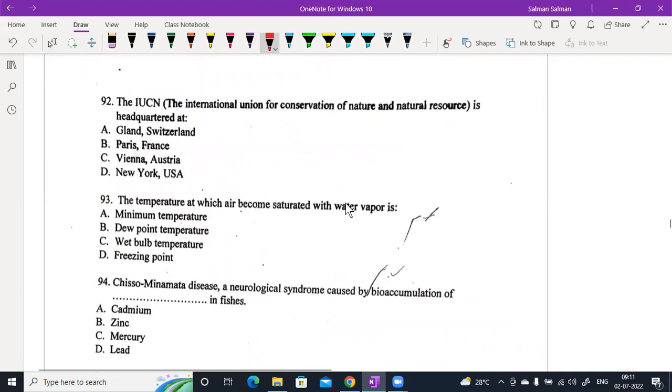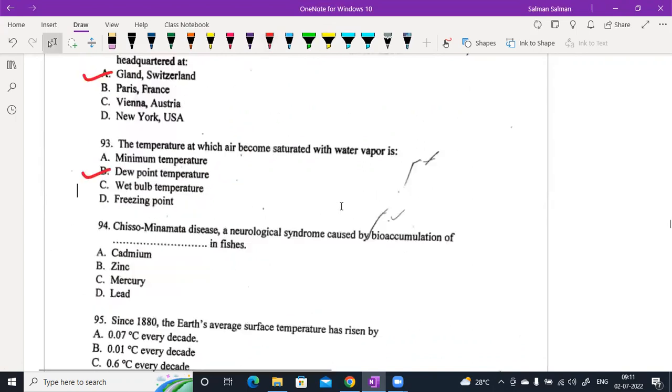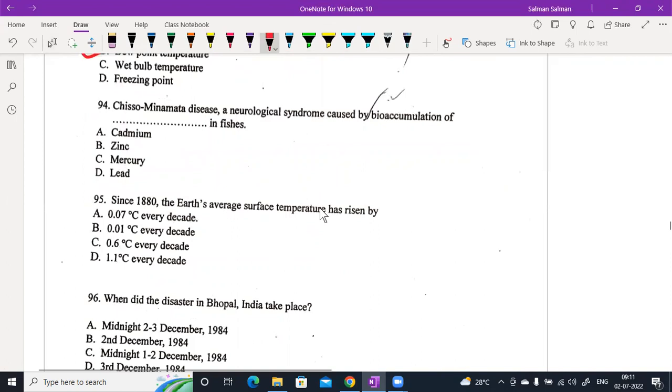92. The IUCN, the International Union for Conservation of Natural Resources, is located in Gland, Switzerland. 93. The temperature at which air becomes saturated with water is known as its dew point temperature.